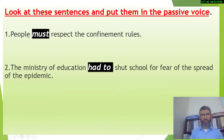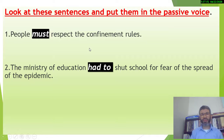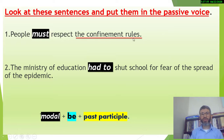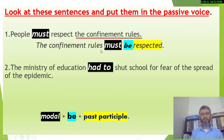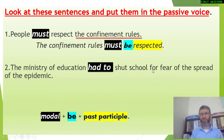The modal in the first sentence is 'must.' To put this sentence in the passive, we look for the object. The object is 'the confinement rules,' so it moves to the subject position. Applying the rule — modal + be + past participle — we get: 'The confinement rules must be respected.'